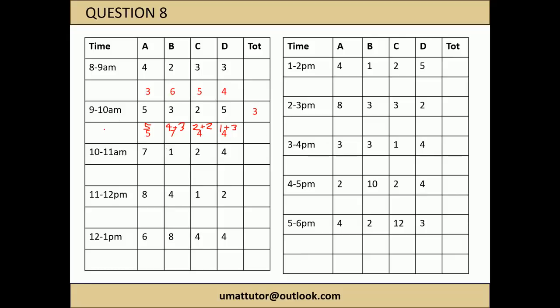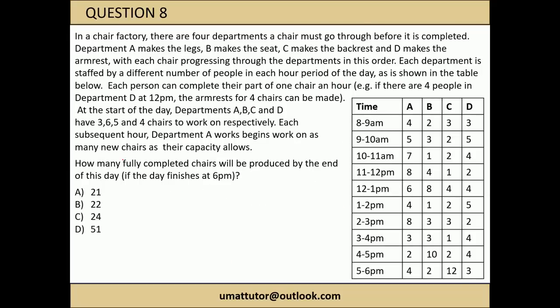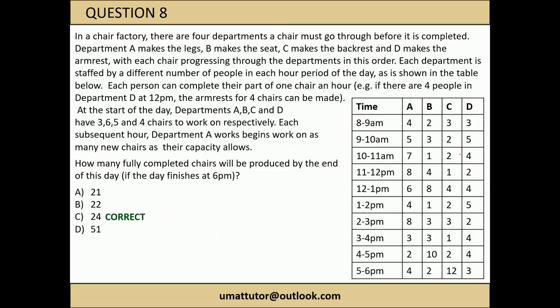Continue filling in the table row by row for each hour period. It's a long process but thorough. Once complete, add up the total column showing chairs completed in each hour - 3 plus 4 plus subsequent values - to get a final answer of 24 completed chairs by end of day. C is the correct answer.